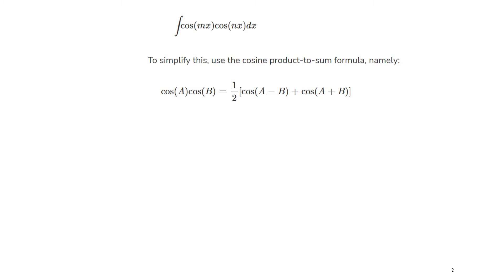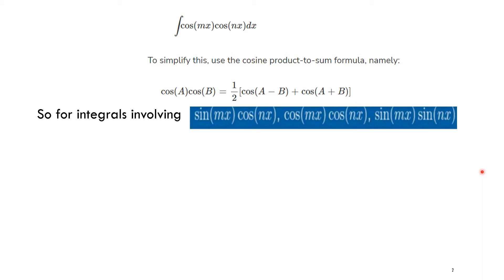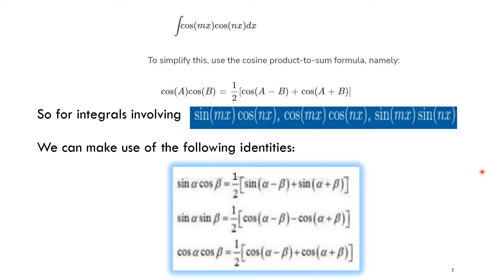For integrals involving these products, we use product-to-sum identities. Sin(α)cos(β) = ½[sin(α − β) + sin(α + β)]. For sin(α)sin(β), we use ½[cos(α − β) − cos(α + β)]. And for cos(α)cos(β), we use ½[cos(α − β) + cos(α + β)].